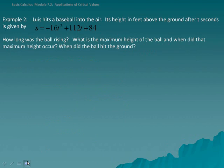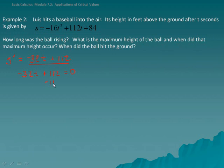In Example 2, Luis hits a baseball into the air. Its height in feet above the ground after t seconds is given by a polynomial. We need to find how long the ball was rising, the maximum height, when the maximum height occurred, and when the ball hit the ground. To find these, we first find the derivative: s prime of t equals negative 32t plus 112. Since this is a polynomial with no discontinuities, we set it equal to 0. Subtracting 112 from both sides gives negative 32t equals negative 112, and dividing by negative 32 gives t equals 3.5.